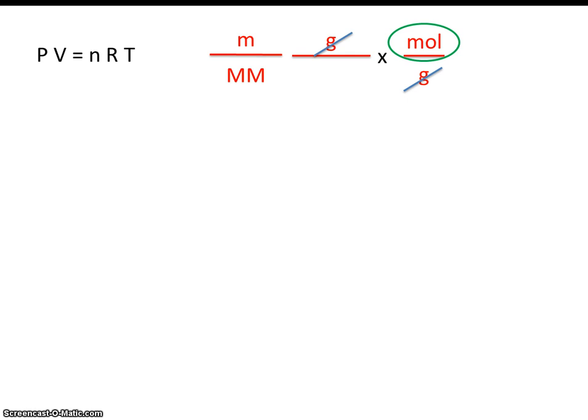So it turns out we can take mass divided by molar mass, and we can insert that in place of n, which is moles. Because mass divided by molar mass, as we just saw from the algebra here, actually is equal to moles. So let's rewrite the ideal gas law,